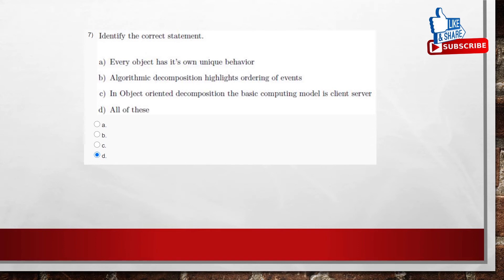And we can't say this object will act as only the client or that object will act as only the server. Sometimes they interchange. Every object may act sometimes as a client and sometimes as a server. When it requests the services, it acts as a client. When it grants the services, then it acts as a server. So all of these, the option is all of these.